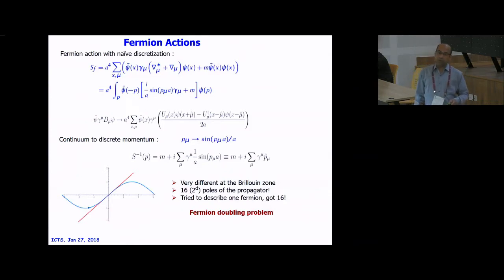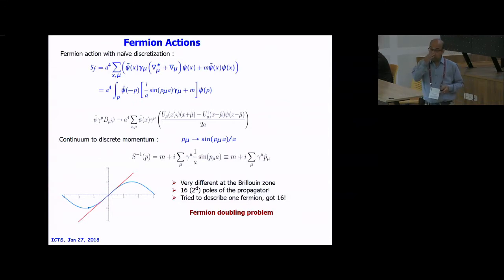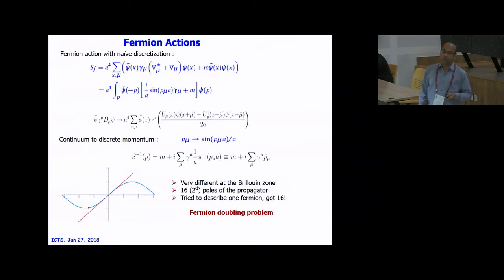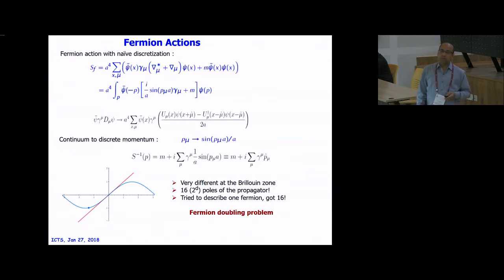You want only one pole in the propagator, but now the pole will appear at multiple corners of the Brillouin zone — in a four-dimensional lattice there will be 2⁴ = 16 poles. Since poles correspond to masses, instead of one fermion we are getting 16 fermions. We don't want that theory — this problem is called the fermion doubling problem. By naive discretization we end up with 16 fermions. We need the dispersion relation to look like the continuum, but we're getting the lattice version. If we can lift those corner fermions to higher mass, they won't contribute.